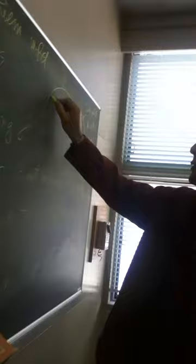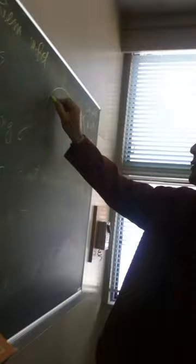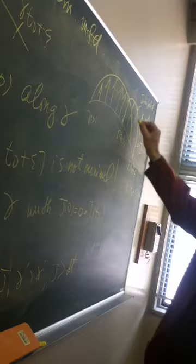So we can get a broken jacore field. And at this point, this is the same as jacore field. And on this interval, I will keep this.